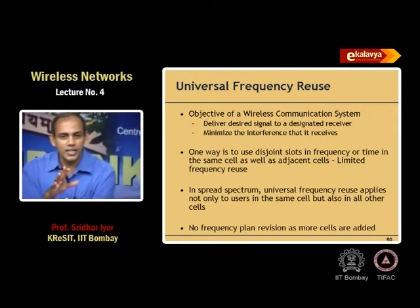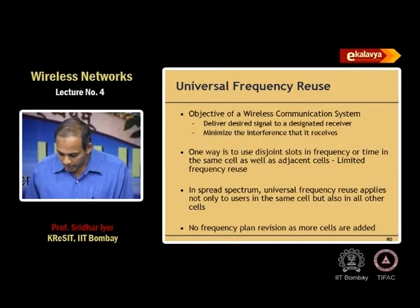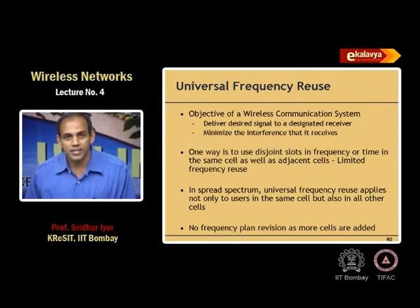Key features of a CDMA system include universal frequency use. Many pain points of GSM go away in CDMA. Universal frequency reuse applies not only to users in the same cell but also to all other cells — a big advantage of CDMA over GSM. There are notions of orthogonal Walsh codes and PN sequences used, but the key insight is that frequency allocation problems simply go away.